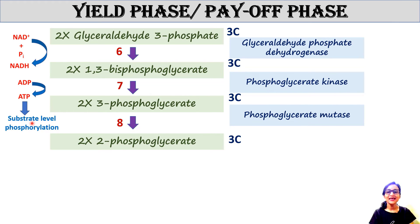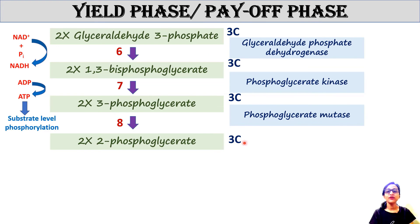Each molecule of 3-phosphoglycerate is converted into 2-phosphoglycerate by the enzyme phosphoglycerate mutase. All of the compounds here are 3-carbon compounds.